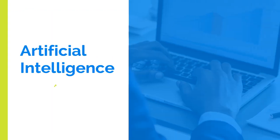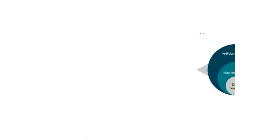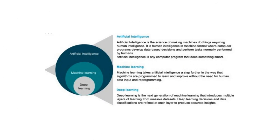Let's see how Artificial Intelligence, Machine Learning, and Deep Learning are connected together. Artificial Intelligence is the science of making machines do things requiring human intelligence. Machine Learning takes Artificial Intelligence a step further in the way that algorithms are programmed to learn and improve without the need for human data input and reprogramming.